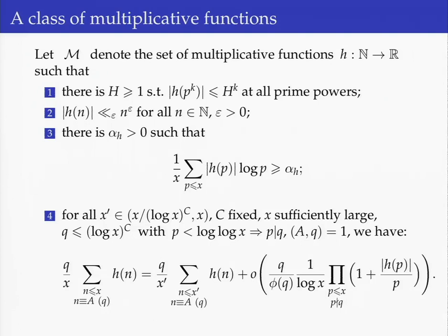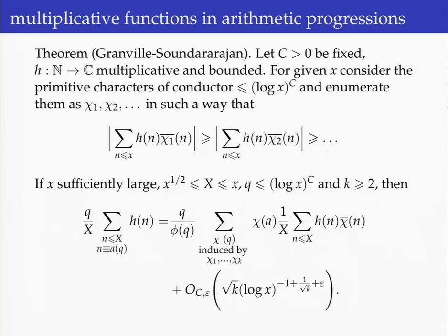In order to do so, we will use a result of Granville and Soundararajan on mean values of multiplicative functions in arithmetic progressions. This result says: let C be a fixed positive constant, let H be a bounded multiplicative function taking values in the complex numbers, and consider for any X the set of primitive characters of conductor running up to at most log X to the C, enumerated so their correlations with H form a non-increasing sequence.